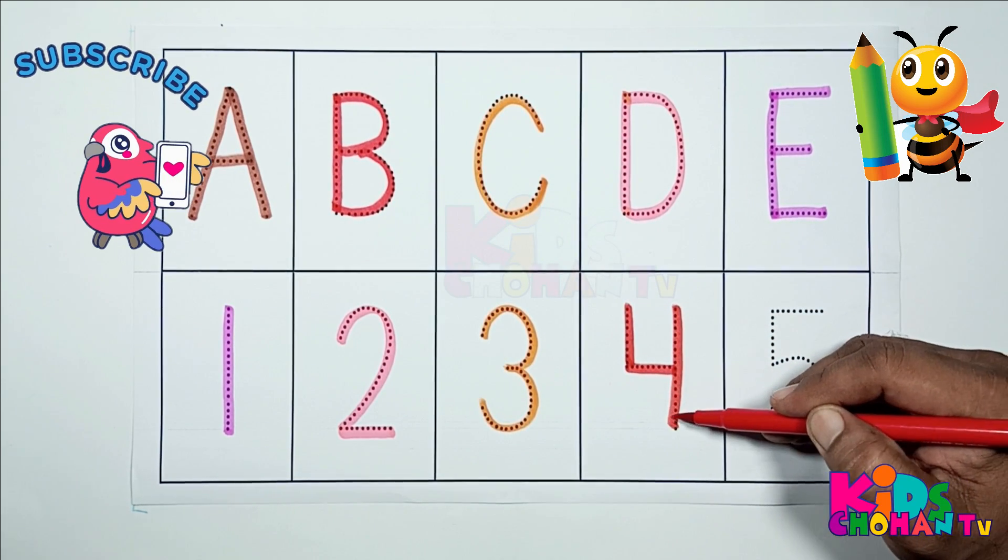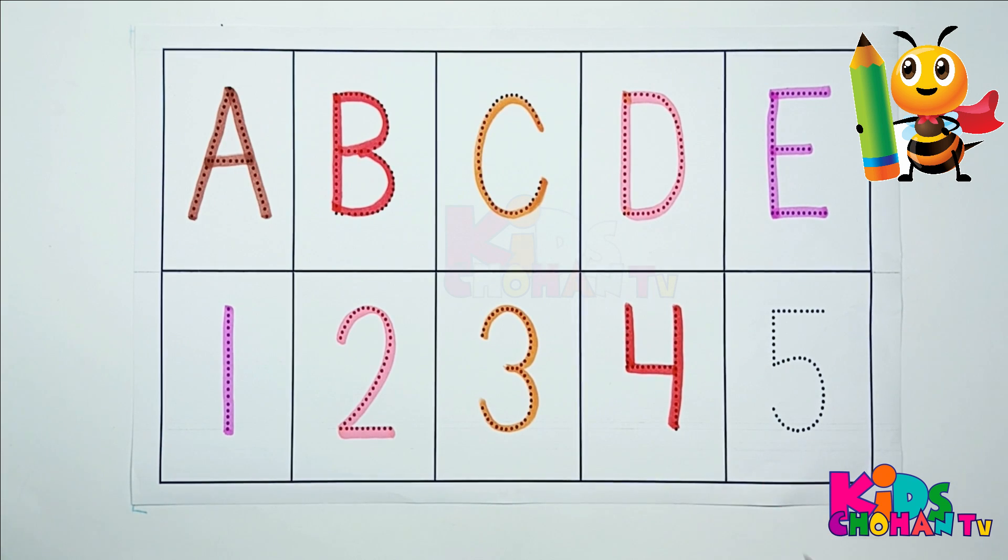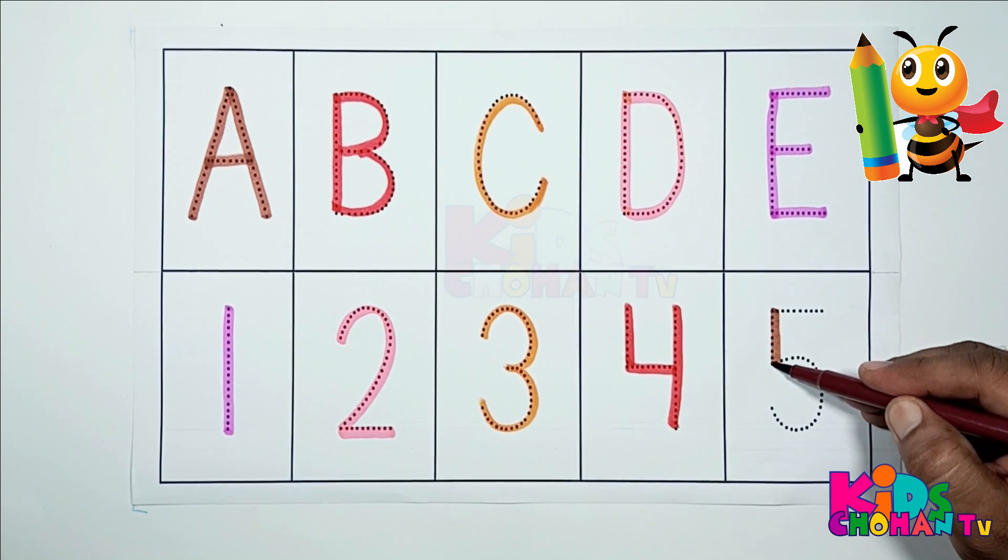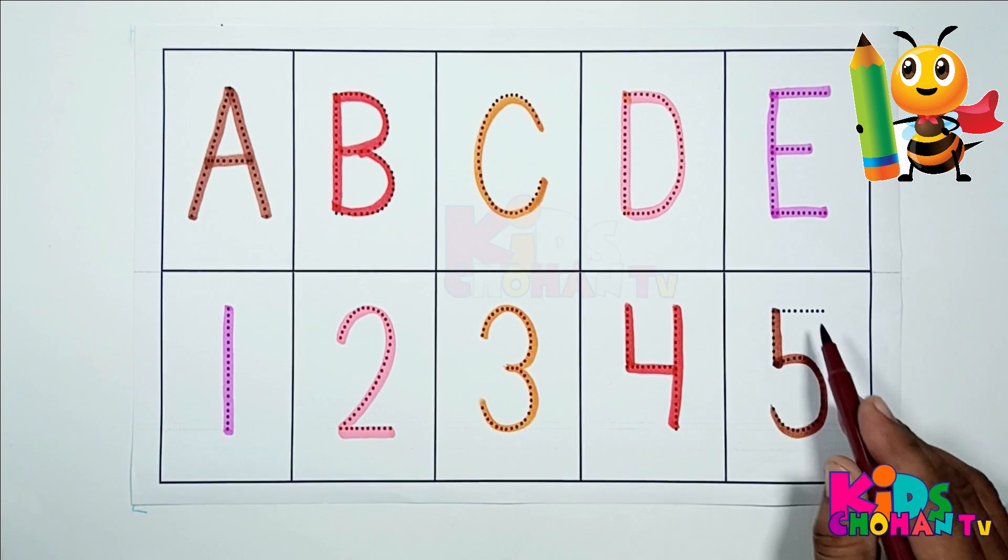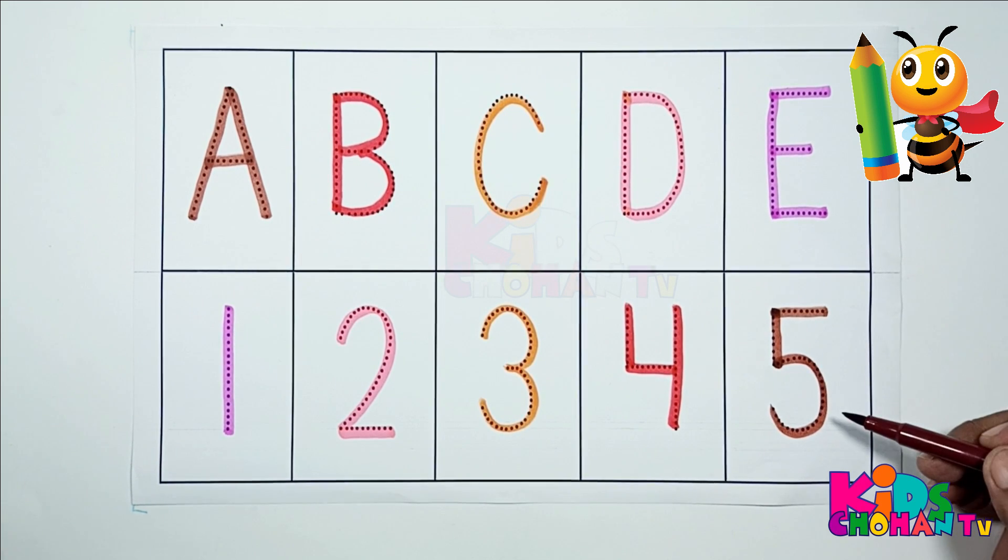Now kids, we are tracing number four. F-O-U-R, four. This is number four. Now kids, we are tracing number five. F-I-V-E, five. This is number five.